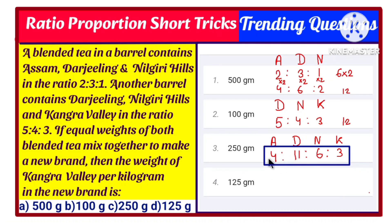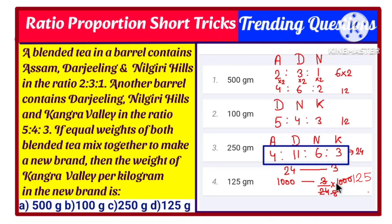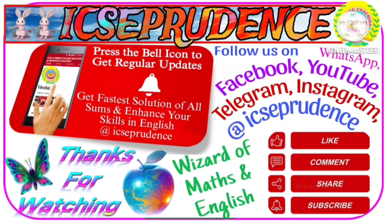Now adding the final ratio: 4+11=15, 15+6=21, 21+3=24. So in 24 total units we have 3 units of Kangara valley. But we need to find the amount in 1 kg (1000 grams), so we calculate 3/24 × 1000. Cancelling, 1000 ÷ 8 gives us 125. So the answer is 125 grams, which is option number 4.